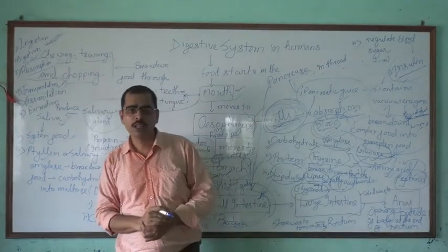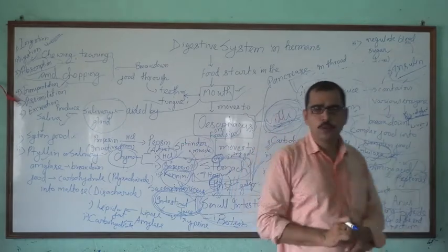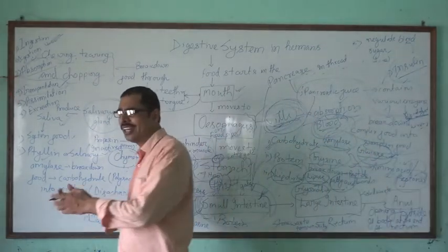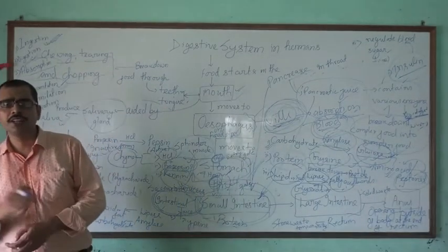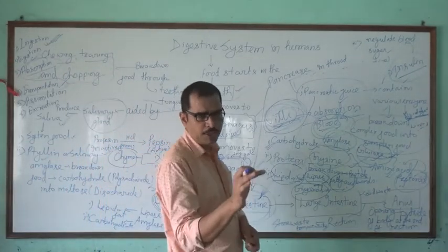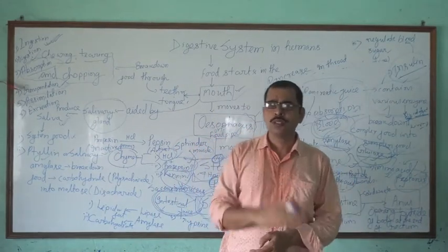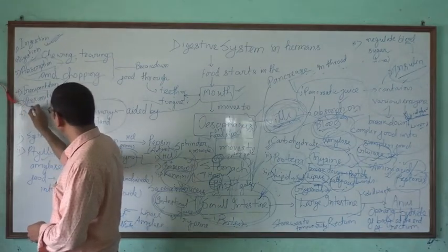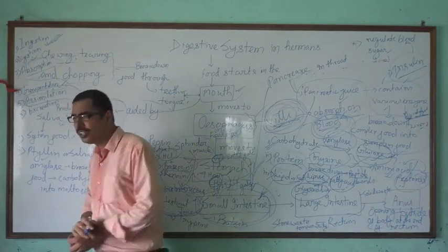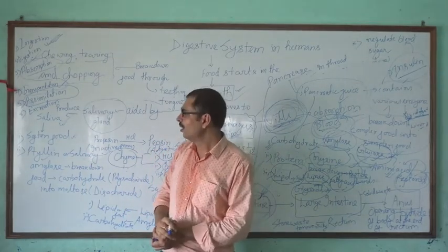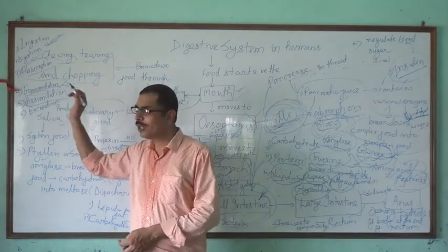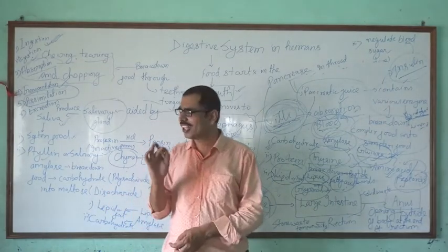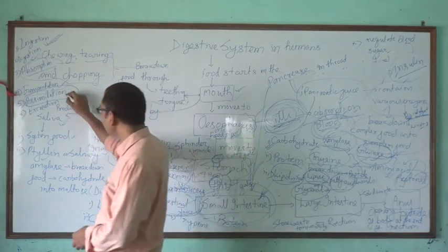Respiration is the process by which digested food molecules are further broken down into simpler molecules — CO₂ and H₂O — to release energy, in the presence of oxygen. This respiration fulfills the energy needs of all cells and organs of the body. The process of utilization of digested food to give energy to cells and organs is called assimilation.